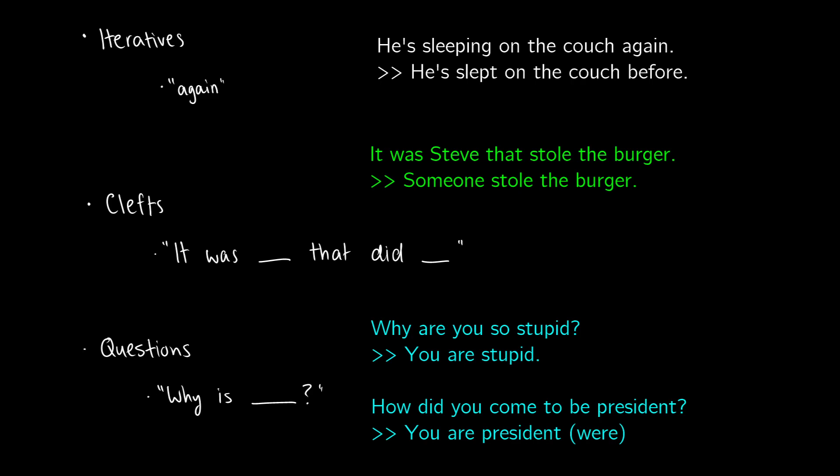That's it for presuppositions. Starting in the next video, we'll get more into the mathematical stuff in semantics. These are the three inference types in the first three videos: entailment, implicature, and presupposition, as well as the tests for distinguishing between them. If you have any questions, leave them down below. Thanks for all the support. I'll see you in the next one.